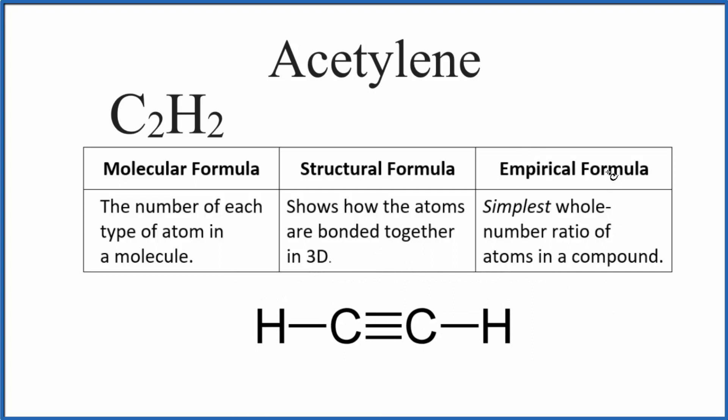Finally, the empirical formula. When we're talking about the empirical formula, we're talking about the simplest whole number ratio of the atoms in the molecule. Here in the molecular formula, it's a 2 to 2 ratio, but we can reduce that down further. We could write this as a 1 to 1 ratio as well. This is as low as we can reduce it. So this is the empirical formula for acetylene, also called ethine.